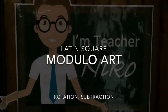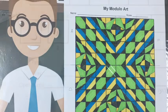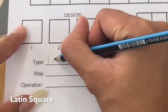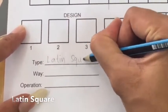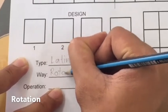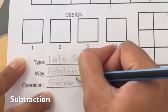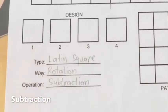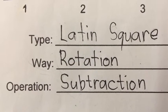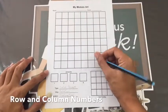Hello kids, it's me again, teacher Nico, and we'll make another modulo art. To start, let's identify the type, operation, and don't forget the column and row numbers.